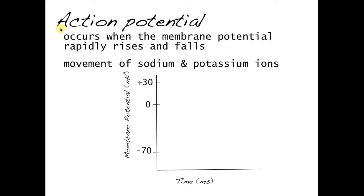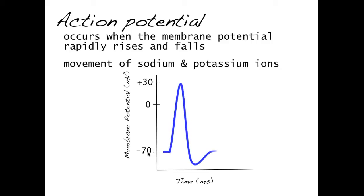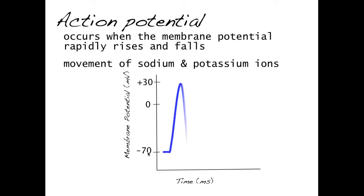Action potentials occur when the membrane potential rapidly rises and falls, and this occurs due to a movement of sodium and potassium ions. I'm going to illustrate here a resting membrane potential of minus 70 millivolts. As ion channels open and close, you'll see a rapid rise in membrane potential followed by a rapid fall — that's what we call an action potential. Rise and then fall.